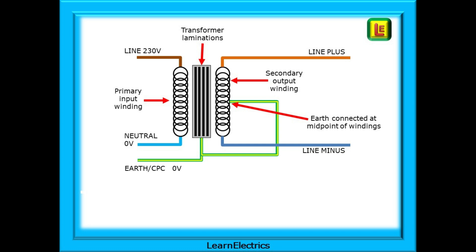We have a line and neutral on the input side, the left, but we do not have a neutral on the output side, the right. Instead we have two phases which we have called here line plus and line minus. Notice that the earth on the secondary side is connected to the centre of the windings - what we call centre tapped earth.